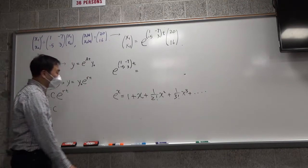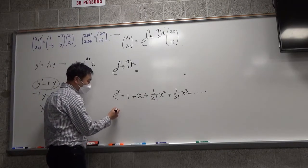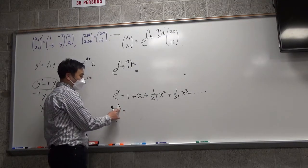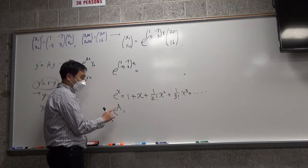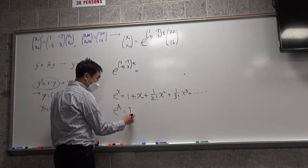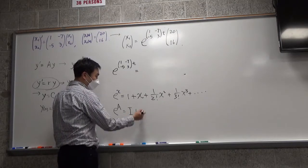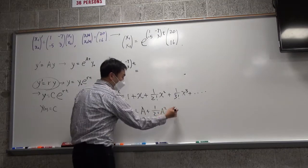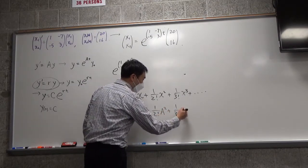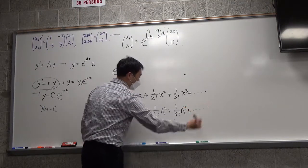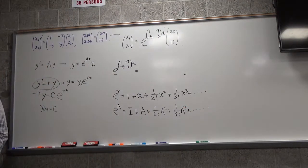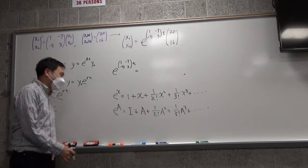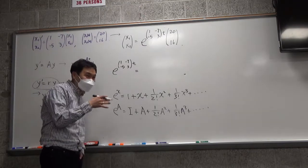e^x equals 1 + x + (1/2!)x² + (1/3!)x³ + ... — that's the Taylor series of e^x. So we're going to do the same thing: define e^(A) as I + A + (1/2!)A² + (1/3!)A³ + ... , where we promote the scalar 1 into the identity matrix I. This isn't necessarily the easier way, but it gives you a bird's-eye view of what's really happening.